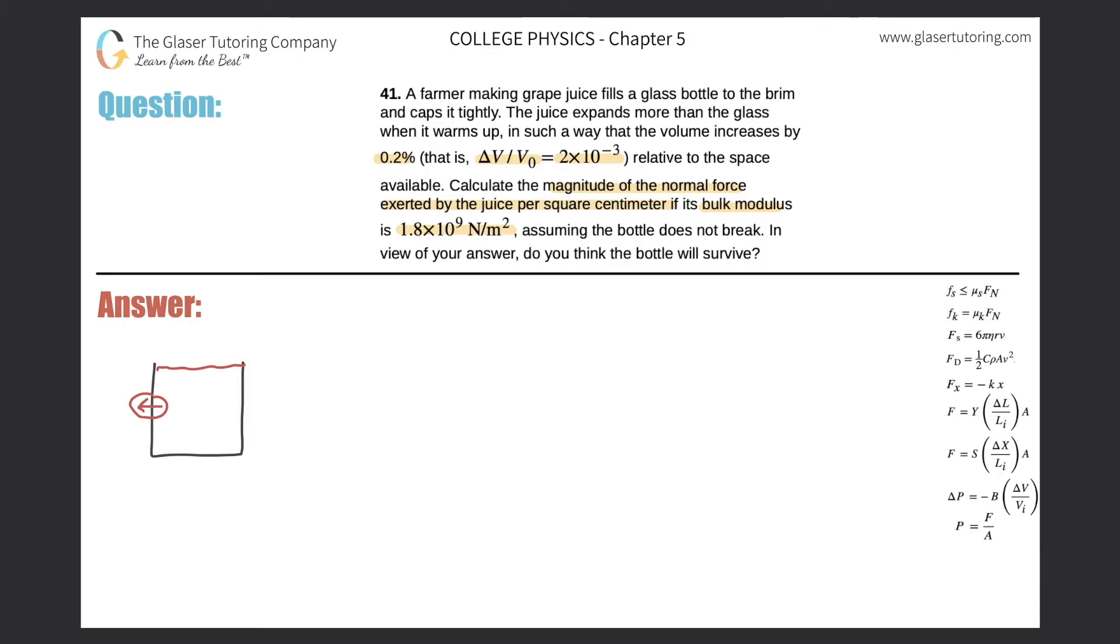Now, since we're dealing with liquids, we have to remember that we're really talking about a bulk modulus type of equation. So over here on the right-hand side, this is the equation where it says that the change in pressure is equal to negative bulk modulus multiplied by change in the volume divided by the initial volume.